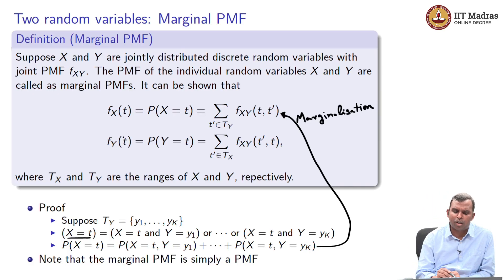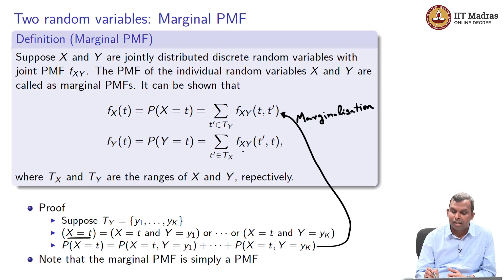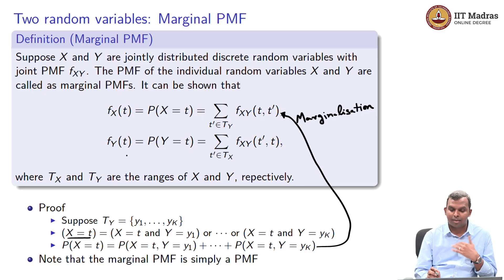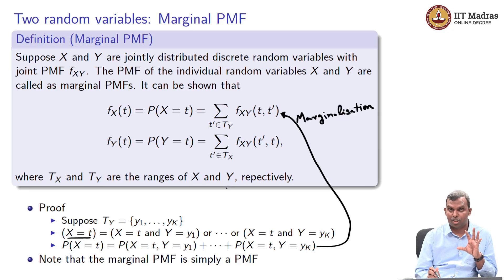Similarly, for f_Y(t), you sum over all t' in the range of X of the joint PMF f_{XY}(t', t). You keep Y fixed at t, go through all possible values for X, and add up the joint PMF to get the marginal PMF. The marginal PMF is uniquely defined once you define the joint PMF — it is simply a PMF with its own range, calculable from the joint PMF through marginalization.